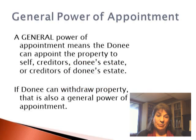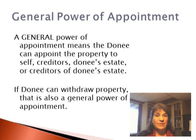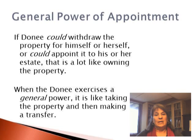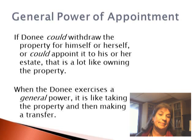Another way to divide up powers of appointment: a general power of appointment means the donee can appoint the property to self, creditors, donee's estate, or creditors of donee's estate. If the donee has a right to withdraw the property from the trust — take it for yourself — that's a general power of appointment. If the donee could withdraw the property for self or could appoint it to his or her estate, that's a lot like owning the property.